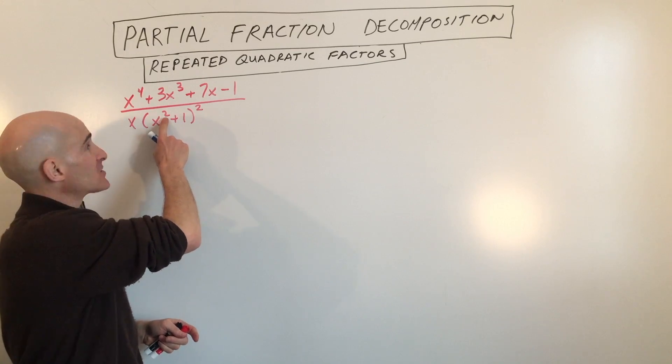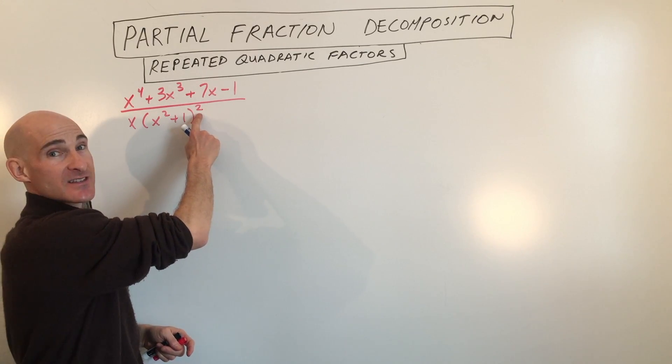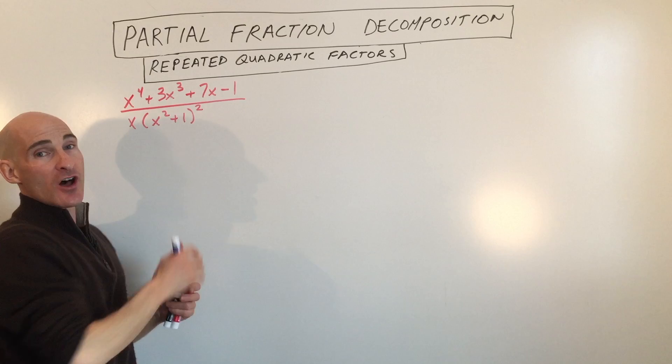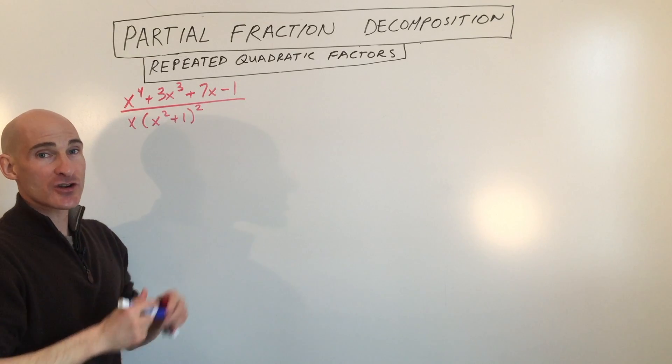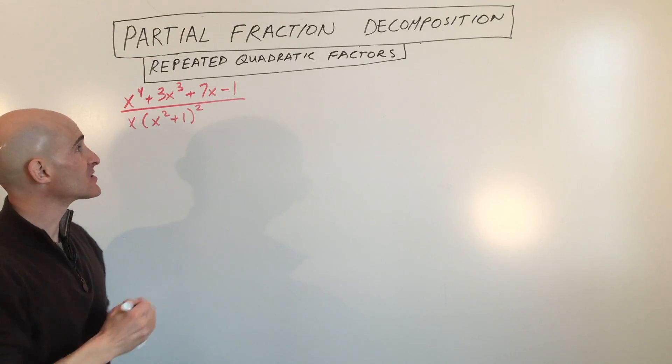We have a quadratic factor, x squared, and it's repeated — it's to the second power. So how do we solve a partial fraction decomposition problem like this?